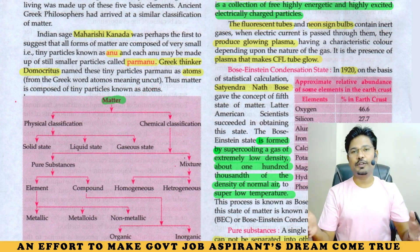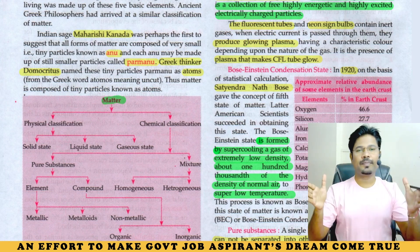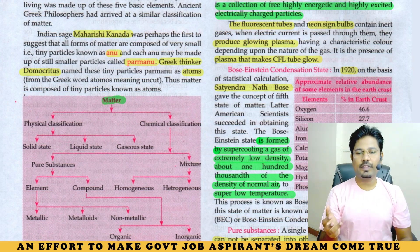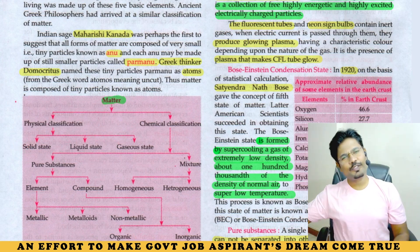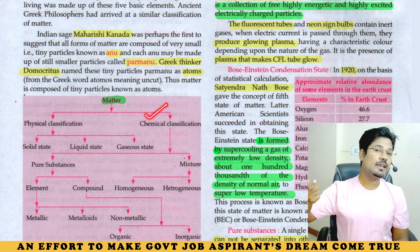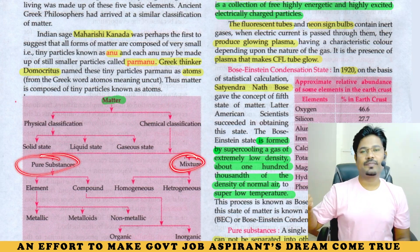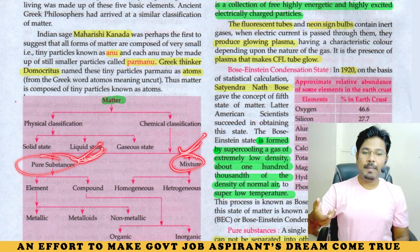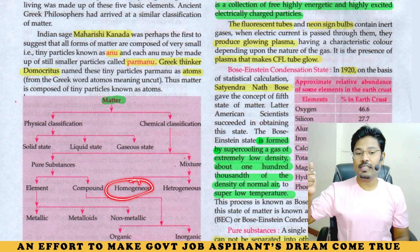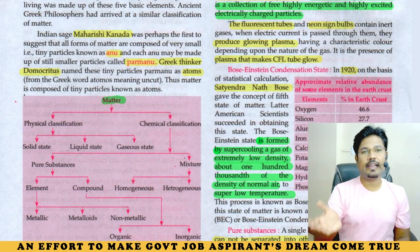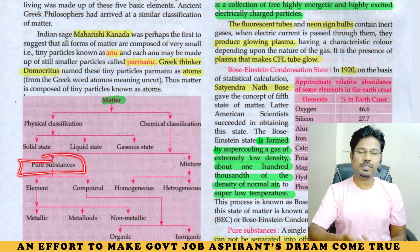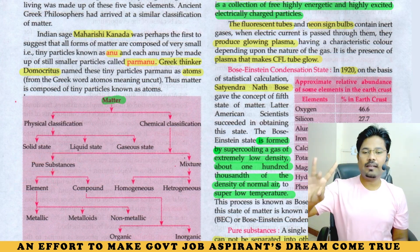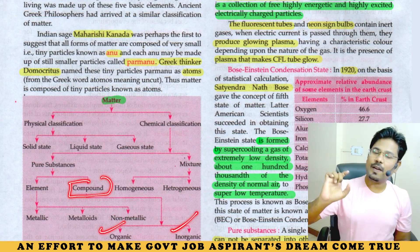Matter is classified into two: Physical and Chemical. Physical classification gives us solid, liquid, and gaseous states. Chemical classification gives pure substances and mixtures. Pure substances include elements — metals, metalloids, and non-metals — and compounds — organic and inorganic compounds. Mixtures are homogeneous or heterogeneous.